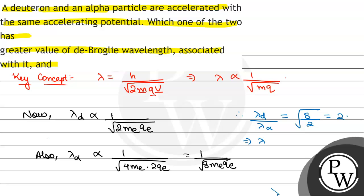So, from here we have lambda of deuteron is equal to 2 times lambda of alpha particle.